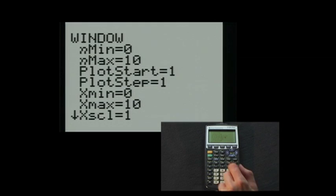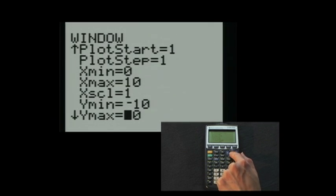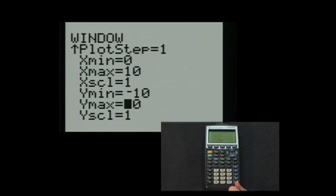Now we want to choose an appropriate window to view our plot. Notice that x here actually represents n, so we will set the xmin and xmax values to match our n values. For our system, we will set ymin and ymax to values that will capture all of the values of the system for the first 10 iterations. We will set them to 0 and 100 respectively.